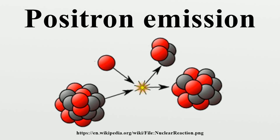The Curies termed the phenomenon artificial radioactivity, since phosphorus-30 is a short-lived nuclide which does not exist in nature. The discovery of artificial radioactivity would be cited when the husband and wife team won the Nobel Prize.